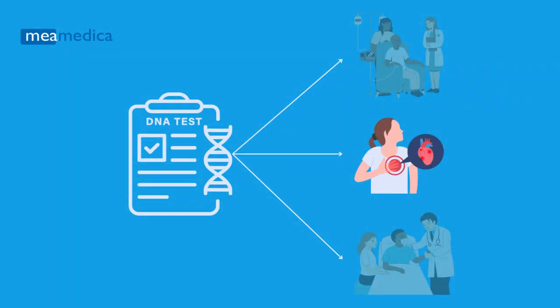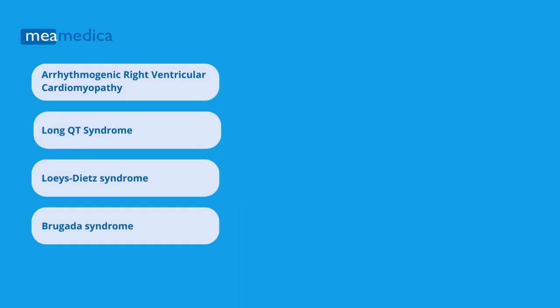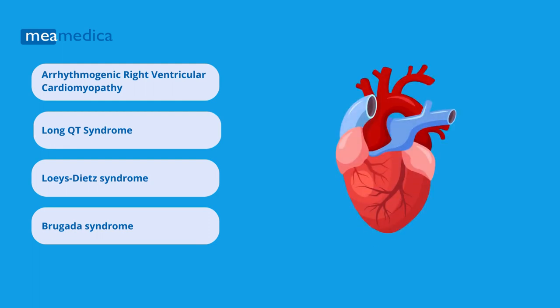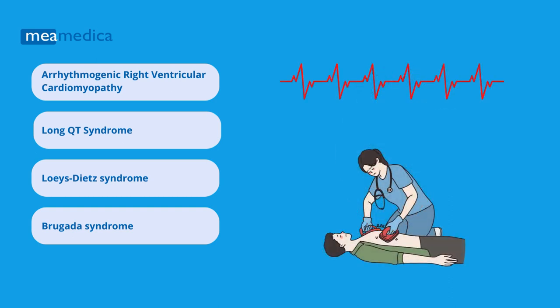Regarding conditions that might increase the risk of cardiovascular problems, we analyze the presence of variants in genes known to influence the development of arrhythmogenic right ventricular cardiomyopathy, Brugada syndrome, Long QT syndrome, and Loeys-Dietz syndrome. These are different types of heart-related issues. The consequences of these cardiovascular diseases can range from irregular heartbeats to life-threatening events like sudden cardiac arrest.